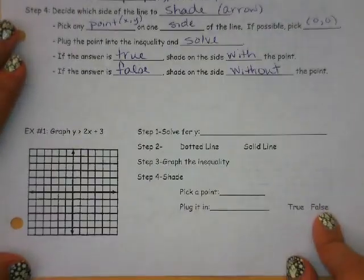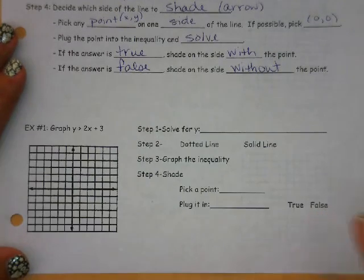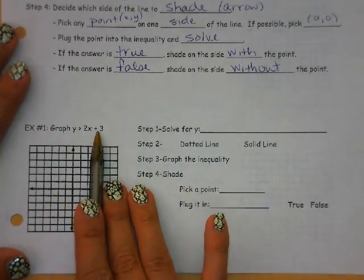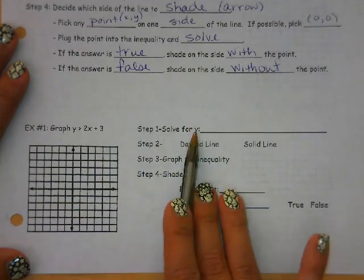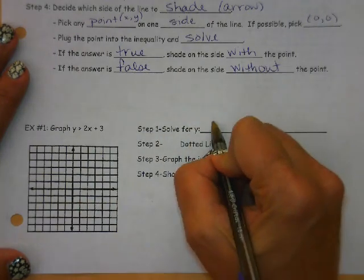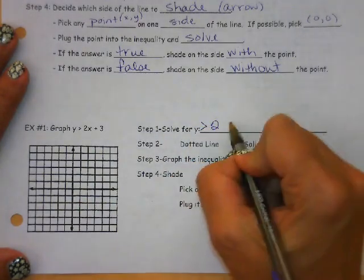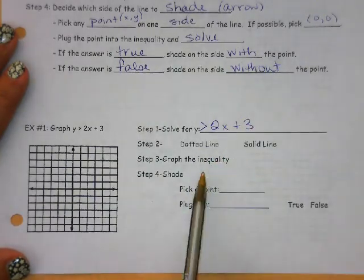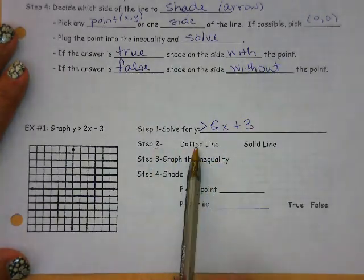So let's look at a real-life practice problem here. We have y is greater than 2x plus 3. Solve for y? Well, we don't need to do that. It's already done. So we have y is greater than 2x plus 3. We need to first decide what kind of line we're going to have.